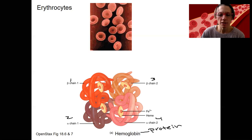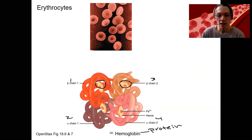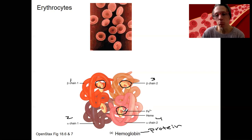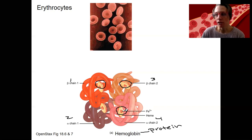That means there are four sites that contain an iron and a heme group. This is a heme molecule that requires iron — that's why you need iron. When you have blood loss, you sometimes become anemic and need to intake more iron. This heme is the red pigment that gives your red blood cells their red color, and this is where oxygen and carbon dioxide are going to bind.